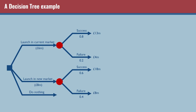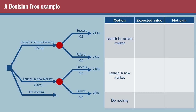This is the example - the same one from the other video, so if you've already practiced it that's fine. If you'd like to have a go, pause the video now. There are two things we need to work out: expected value and net gain. I'm going to put them in a table with our three options: launching the current market, launching the new market, and doing nothing. The first thing we look at is expected value - if we decide to launch in the current market, how much are we likely to return on average?